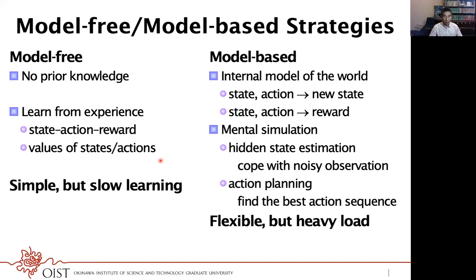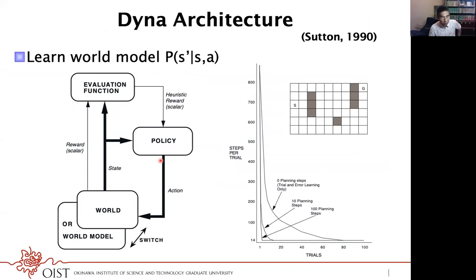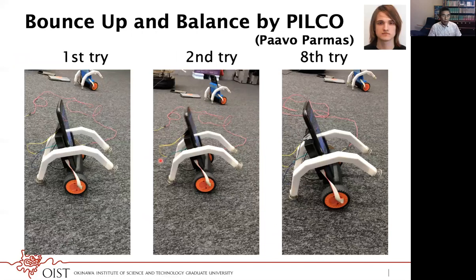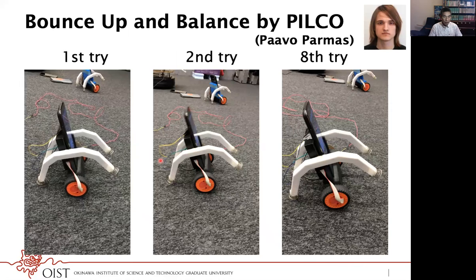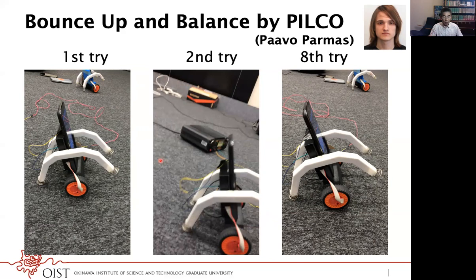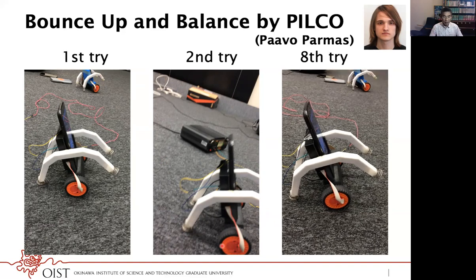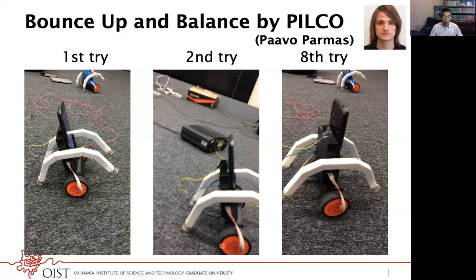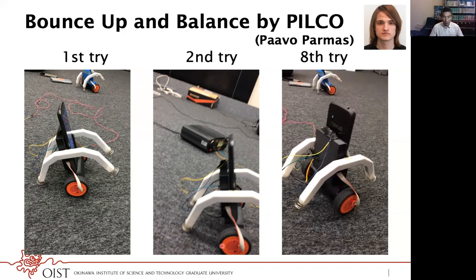How to combine model-free and model-based frameworks is a very interesting topic. One early proposal of a model-based framework was the architecture called Dyna. This is work by my former PhD student Paul Palmas, using a model-based reinforcement learning framework called PILCO. The task was for a smartphone robot to balance upright. Initially the robot makes almost random movements, collecting data and building a model of how the body responds to movement using Gaussian processes. Using such a model to train the controller, in just under 10 trials this robot could learn to balance — demonstrating the data efficiency of a model-based strategy.